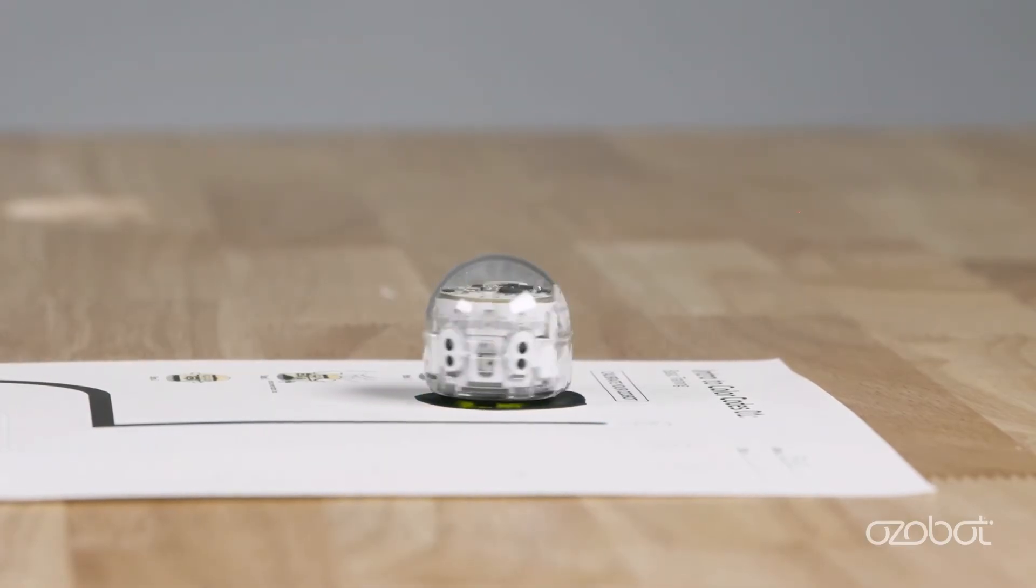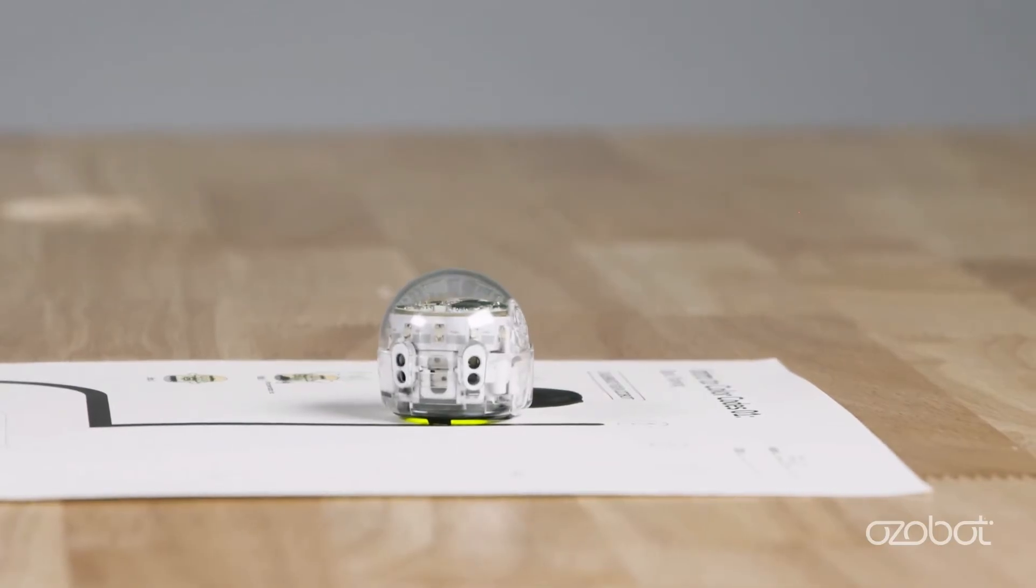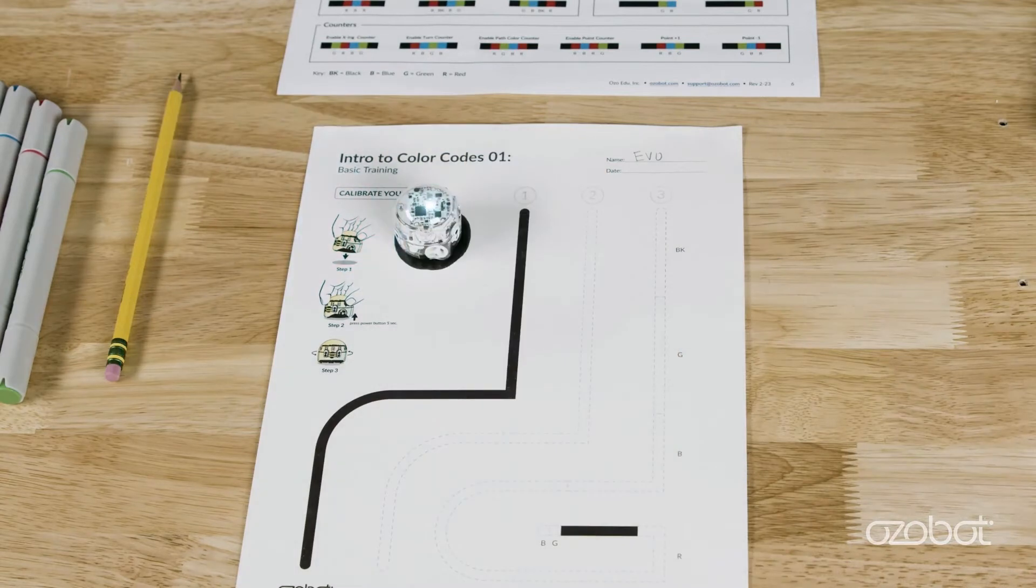The bot will turn left and right, move off the black dot, make a sound, and flash green on top. Calibration is successful. If the top LED flashes red, try calibrating again. Note that calibration is also the first troubleshooting step when Ozobot isn't behaving as expected. Calibrate Ozobot by placing it on a black dot and holding the power button for 3 to 5 seconds.